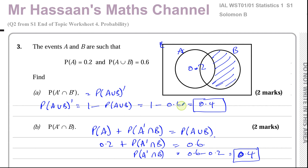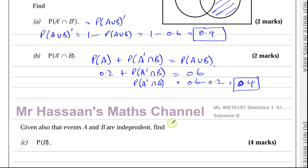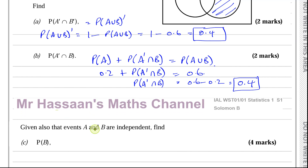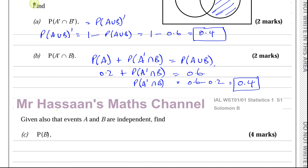So the answer is 0.4 again — same as part A, but it's a different question. That's part B done. Then for part C, given also that events A and B are independent, find the probability of B.